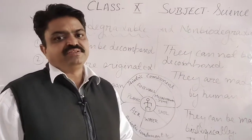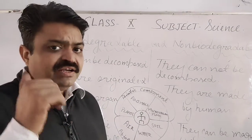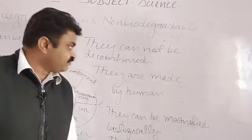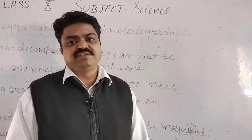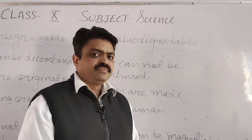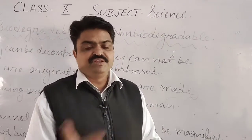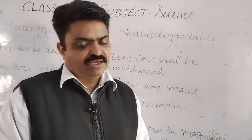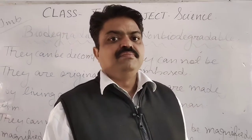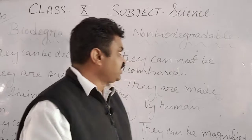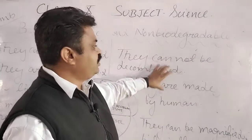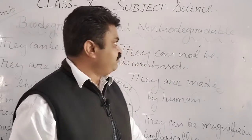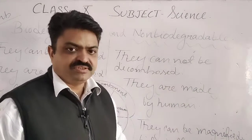Non-biodegradable substances are the things manufactured in industries and come in the category of non-biodegradable waste. Examples include fertilizers, bricks, glass, metallic cans, pesticides, and insecticides — they all come in the category of non-biodegradable substances.